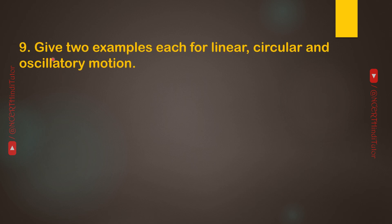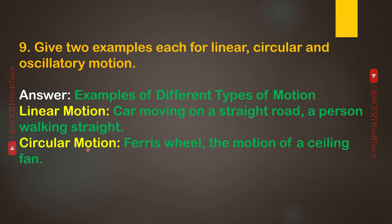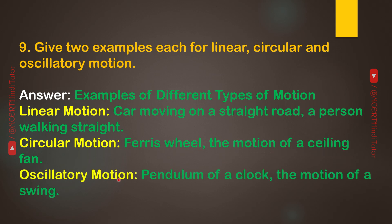Question 9: Give two examples each for linear, circular, and oscillatory motion. Answer — Linear motion: a car moving on a straight road; a person walking straight. Circular motion: Ferris wheel; the motion of a ceiling fan. Oscillatory motion: pendulum of a clock; the motion of a swing.